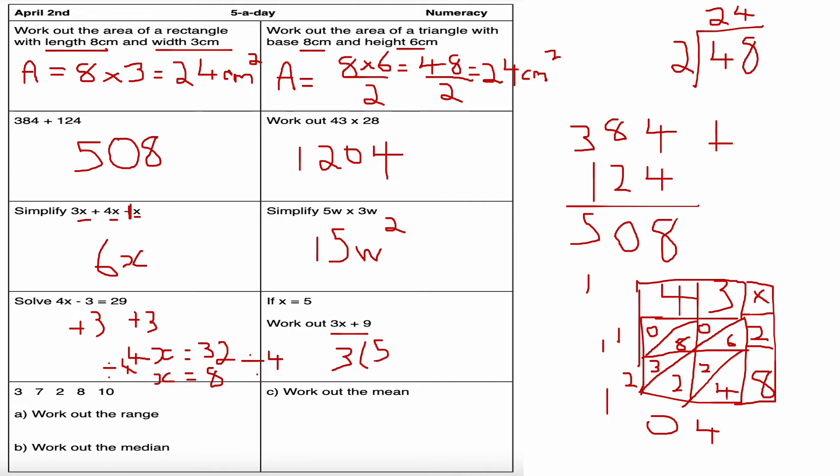Next question: if x equals 5, work out 3x plus 9. It's substitution, so it's 3 lots of 5, 3 times 5 plus 9. Well, 3 times 5 is 15. 15 plus 9 is 24. Just to be clear, the answer to this part gives us 15, 15 plus the 9 gives us 24.